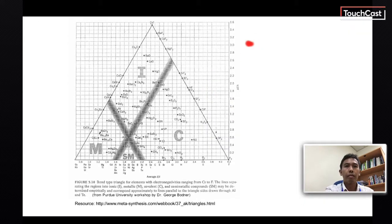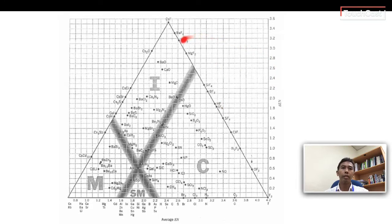Bond type triangle is another way to look at the type of bonding. Determination of bonding type is possible using this triangle. This triangle considers both electronegativity of the two atoms. From the triangle, we know metallic bonds have low electronegativity, covalent bonds have higher average electronegativity and small difference of electronegativity, and ionic bonds have high difference of electronegativity. From this triangle, we can also know compounds that lie in the boundary between ionic and covalent bonding.